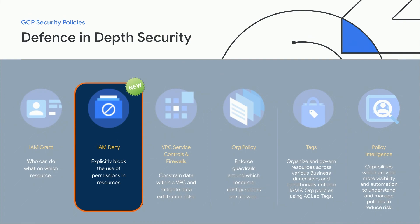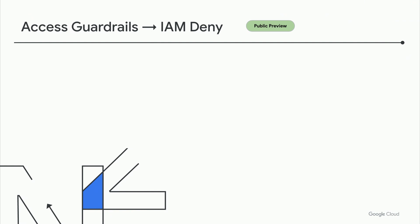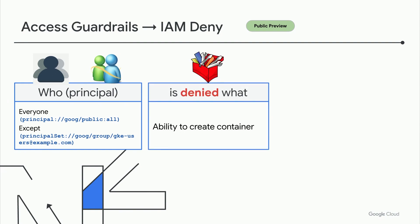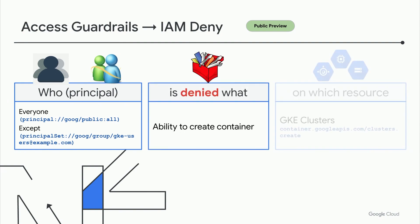IAM deny can help you do just that. Grant policies typically allow access, with access denied by default. However, with an IAM deny policy, which we recently introduced, Taylor can explicitly deny access that overrides any grants. In this case, Taylor can set up an IAM deny policy to block everyone except a limited set of GKE users from having the ability to invoke the create cluster method and create container method for GKE cluster resource types.